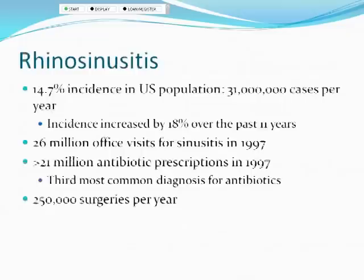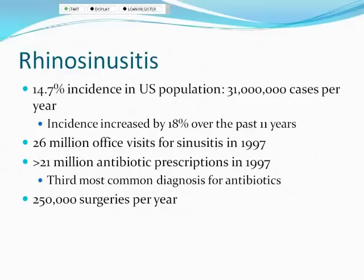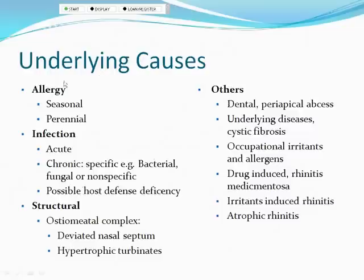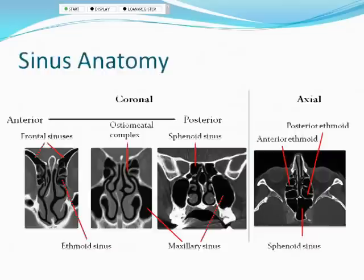Turning to rhinosinusitis — I prefer 'rhinosinusitis' because if you have sinusitis, you're going to have rhinitis symptoms involved. Underlying causes of acute rhinosinusitis include atopy, infection, structural issues like deviated nasal septum or hypertrophic turbinates, underlying diseases such as cystic fibrosis, Churg-Strauss, Wegener's, immune defects, and rhinitis medicamentosa from overuse of nasal decongestants.